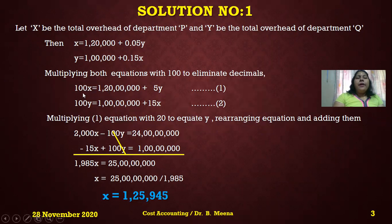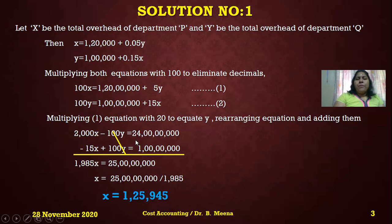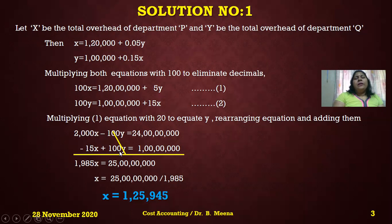Multiplying equation one by 20: 100 × 20 = 2000x, and 5 × 20 = 100y giving minus 100y; the right side becomes 1,20,00,000 × 20 = 24 crores. Adding the second equation as-is: minus 15x + 100y = 1 crore. The plus 100y and minus 100y cancel, leaving 2000x − 15x = 1985x, and 24 crores + 1 crore = 25 crores.